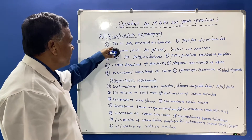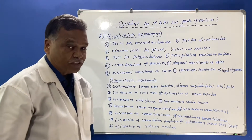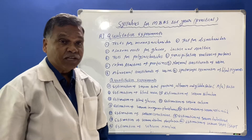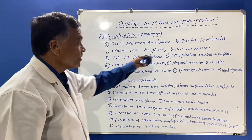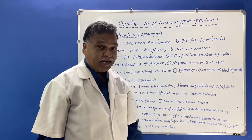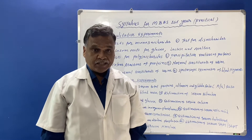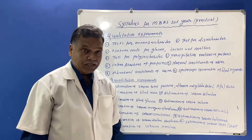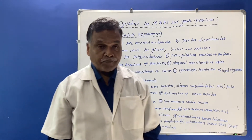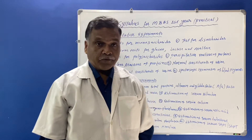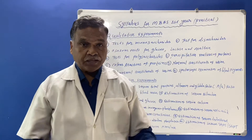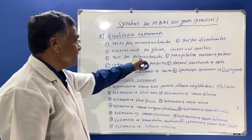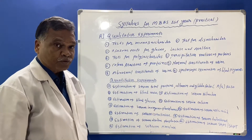The first experiment will be the test for monosaccharides — the reducing sugars. Then the test for disaccharides, which will be the test on sucrose. Then the osazone test for glucose; most students have to perform the osazone test for glucose, lactose, and maltose in the laboratory. The fourth experiment will be the test for polysaccharides.